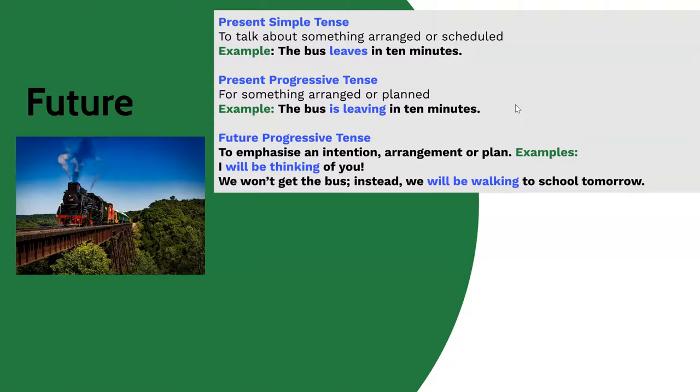The bus is leaving in 10 minutes. Hurry up, quick, we're going to miss it. The future progressive tense emphasises an intention, arrangement or plan. I'll be thinking of you. We won't get the bus. Instead, we'll be walking to school tomorrow.